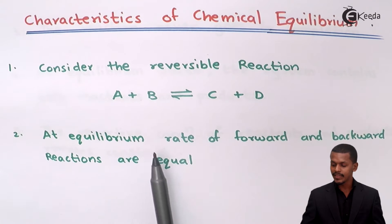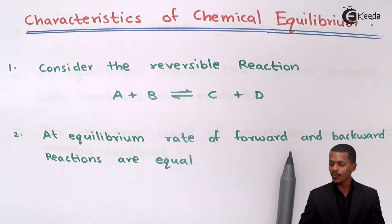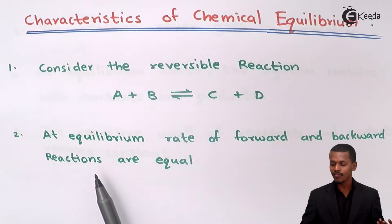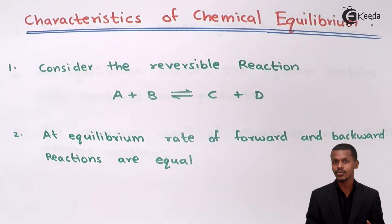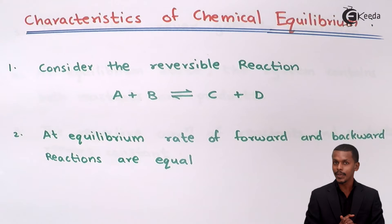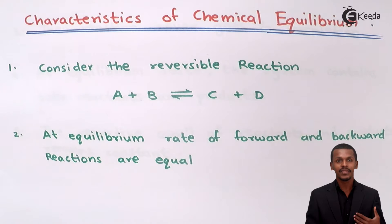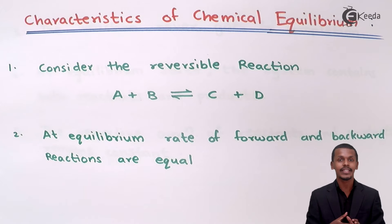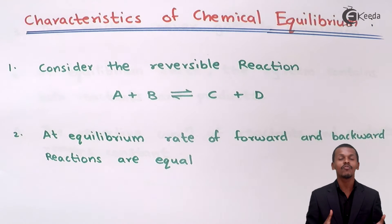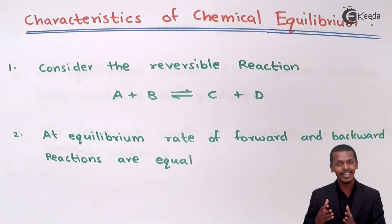At equilibrium, the rate of forward reaction and the rate of backward reaction are both equal. This is only possible at equilibrium. At any other point there would be a very small difference, but at equilibrium they are the same.